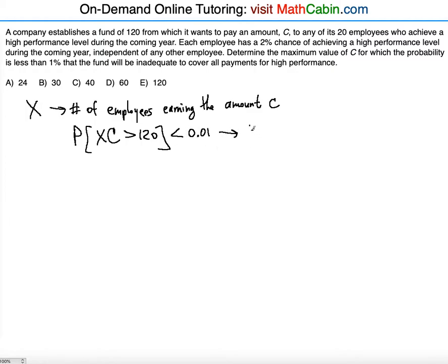Notice that we can divide both sides of the inequality by C, so we get the probability that X is greater than 120 divided by C is less than 0.01.